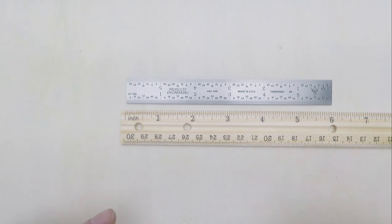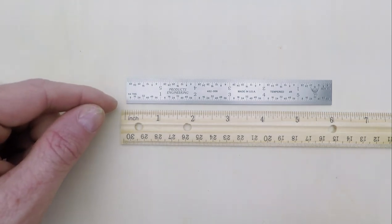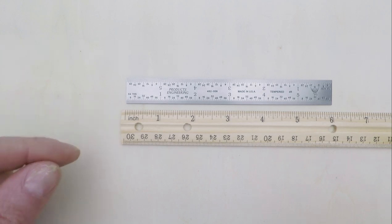On this particular model, which is US units only, the smallest division is one sixty-fourth of an inch, which is four times better than your everyday ruler. Some steel rules even have divisions as small as one one-hundredth of an inch, which is about the thickness of two pieces of paper back to back.